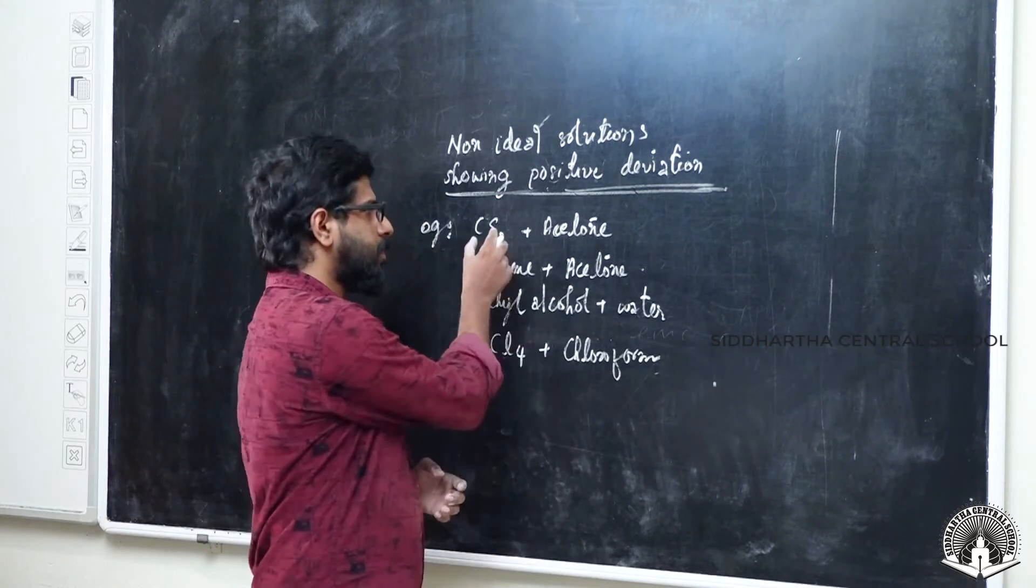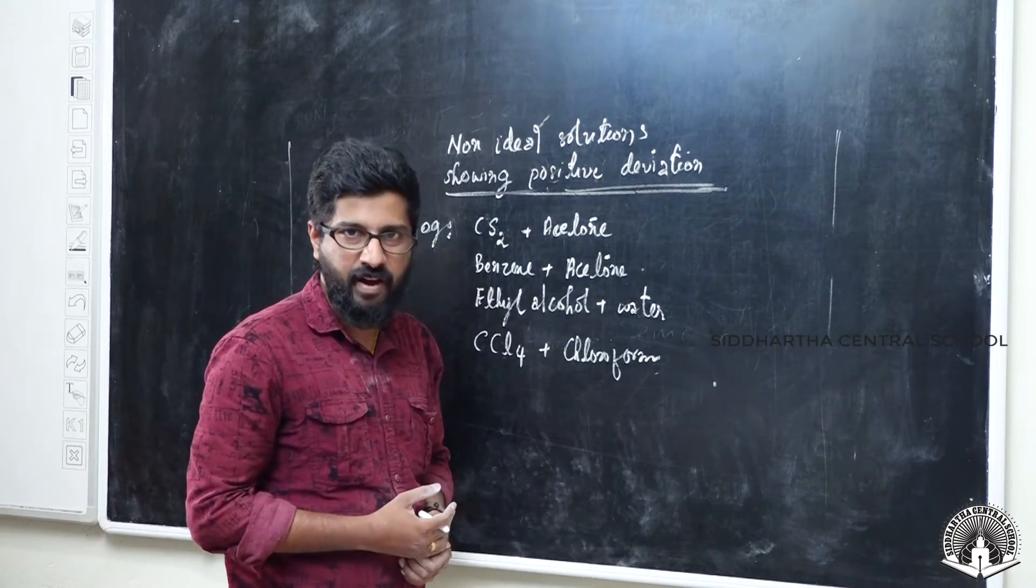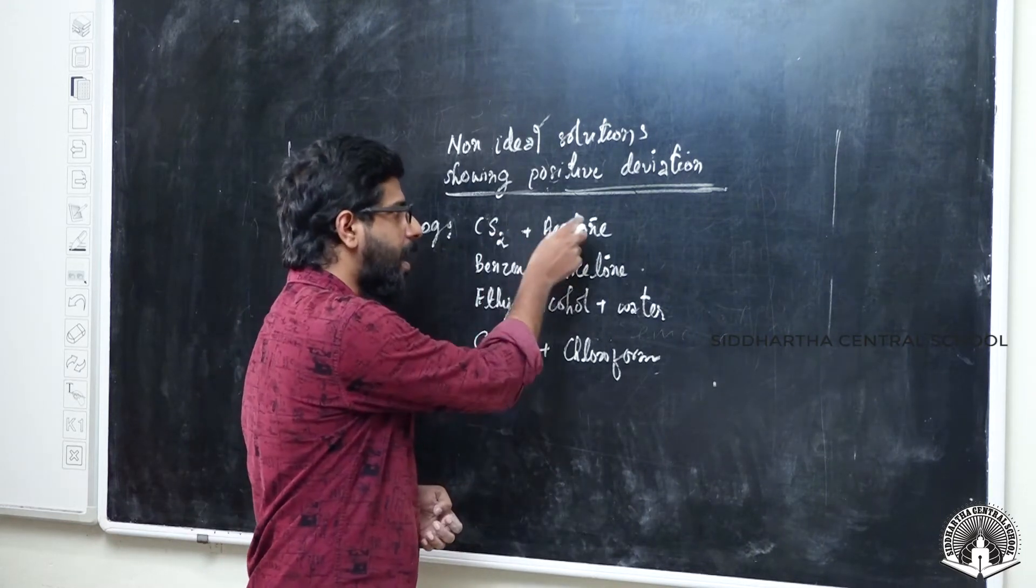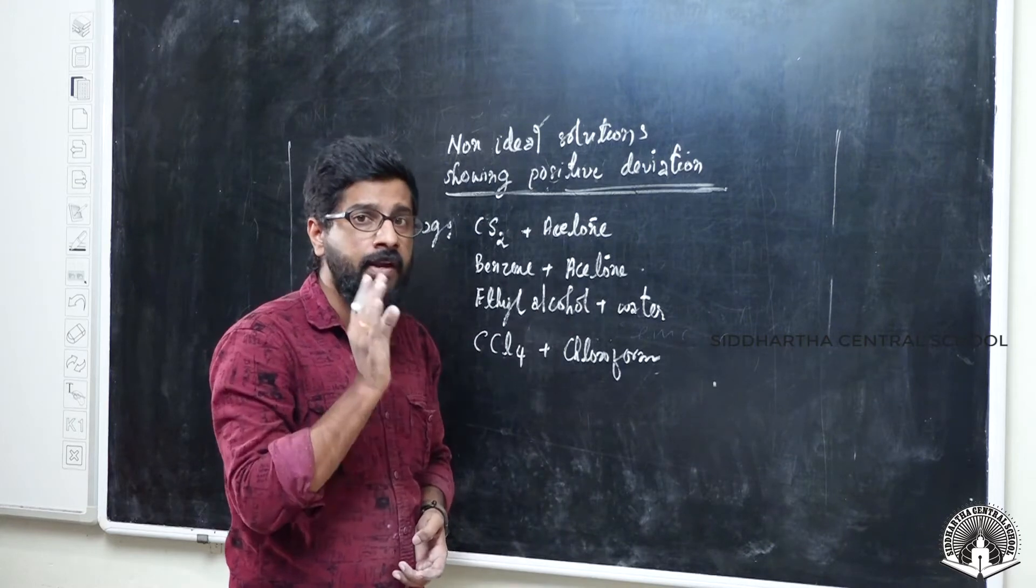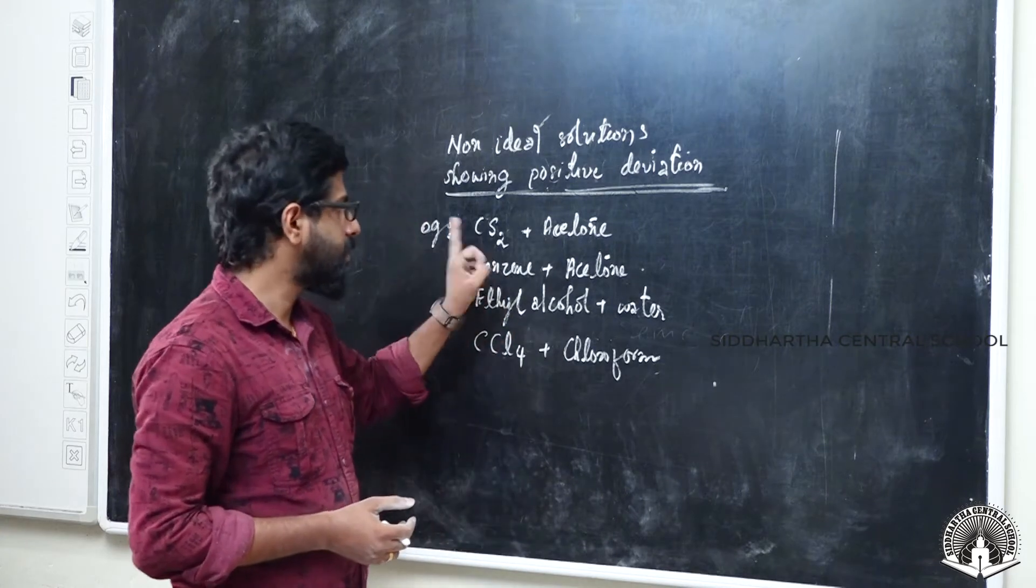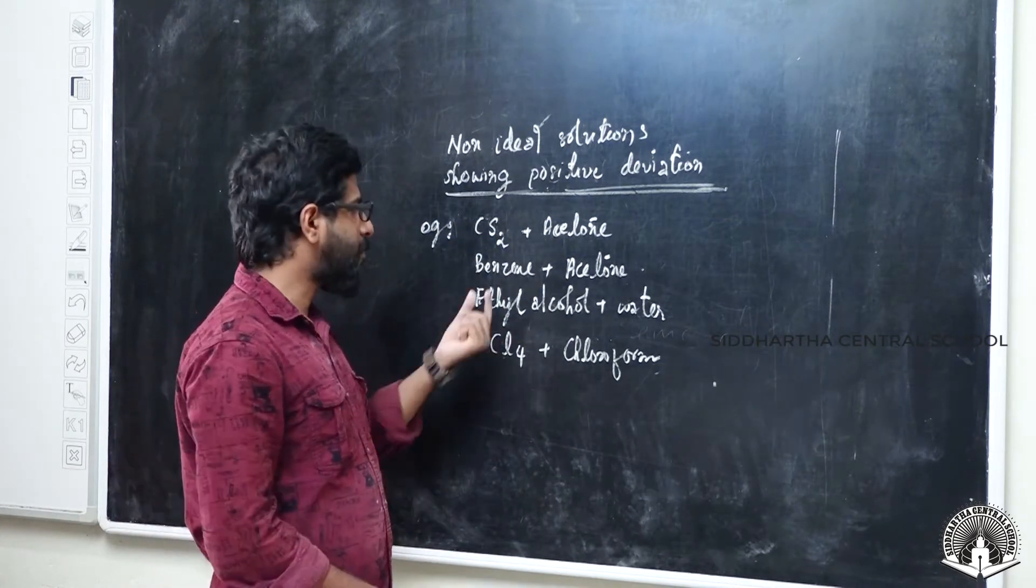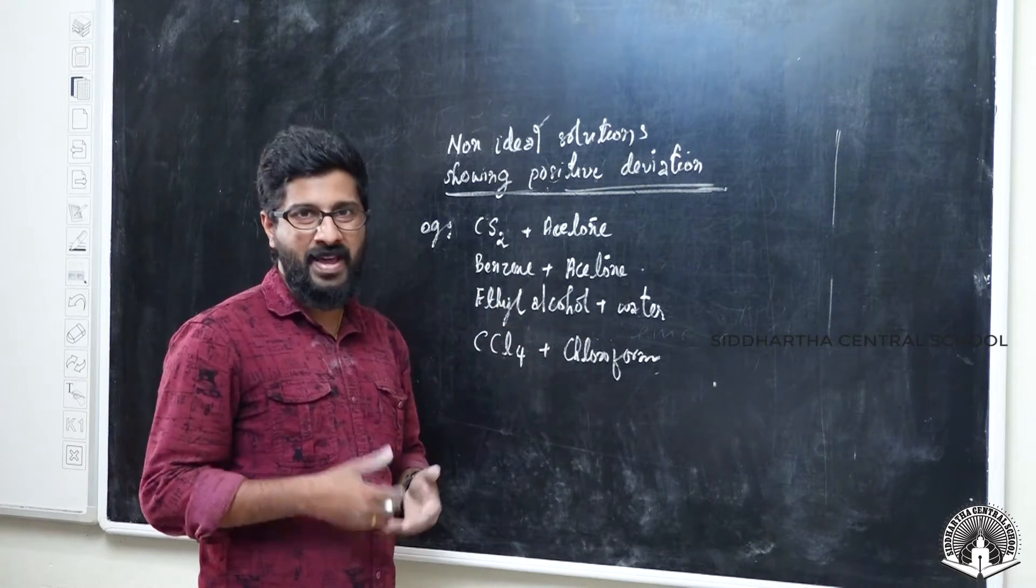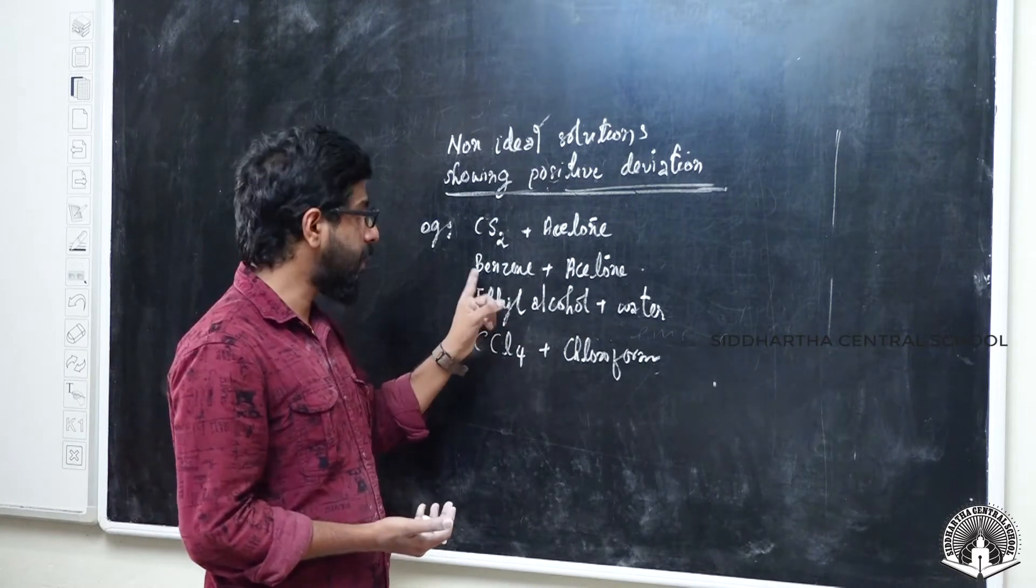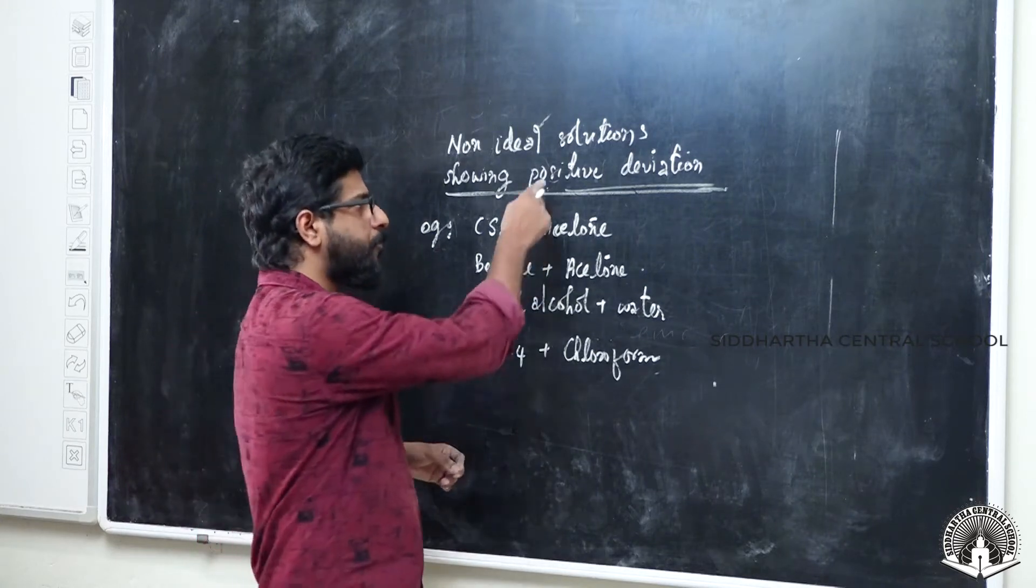First example: CS2 plus acetone. Carbon disulfide and acetone mixture is a non-ideal solution showing positive deviation. Second example: benzene plus acetone. Benzene and acetone mixed together form a non-ideal solution which shows positive deviation.